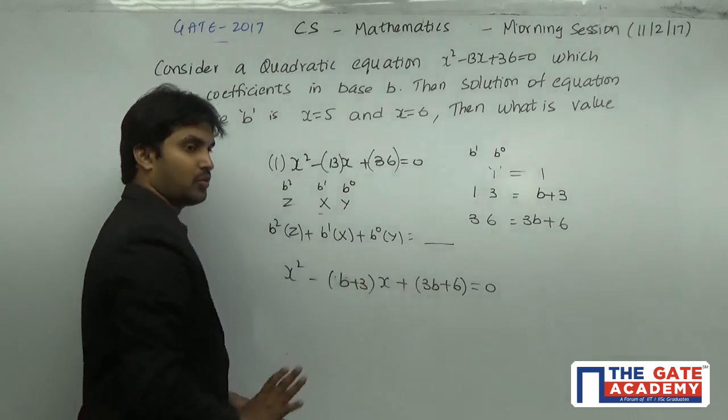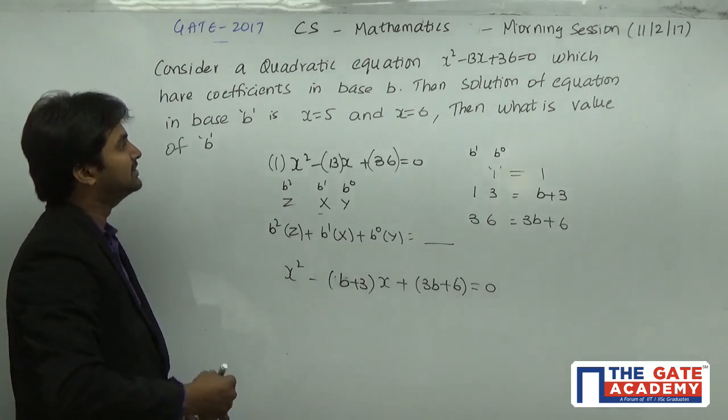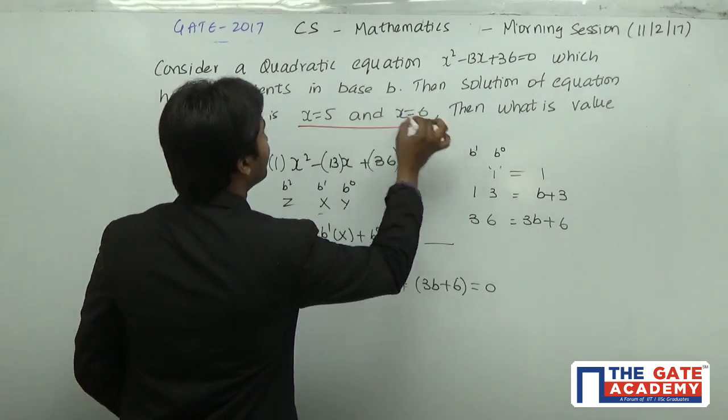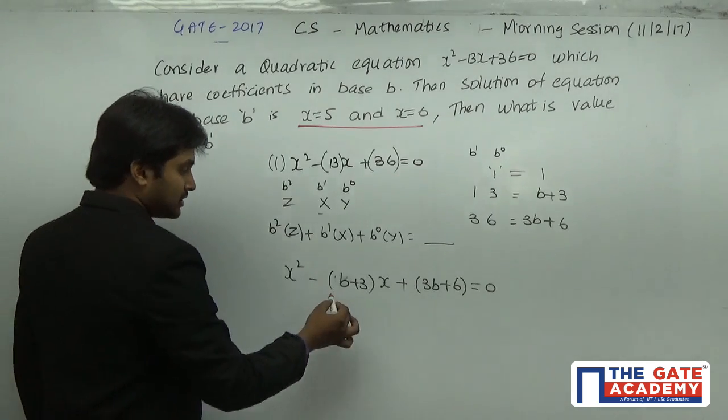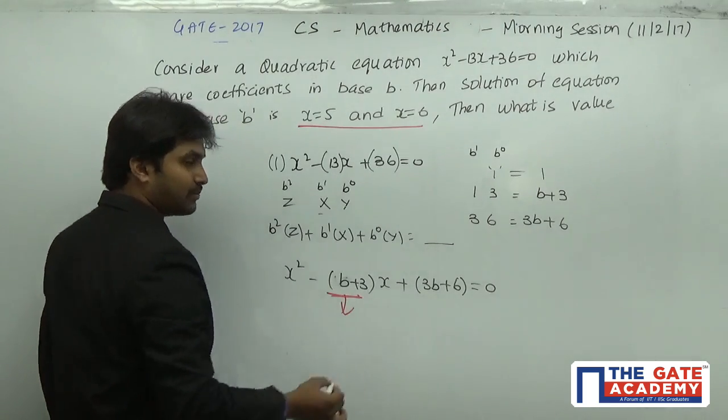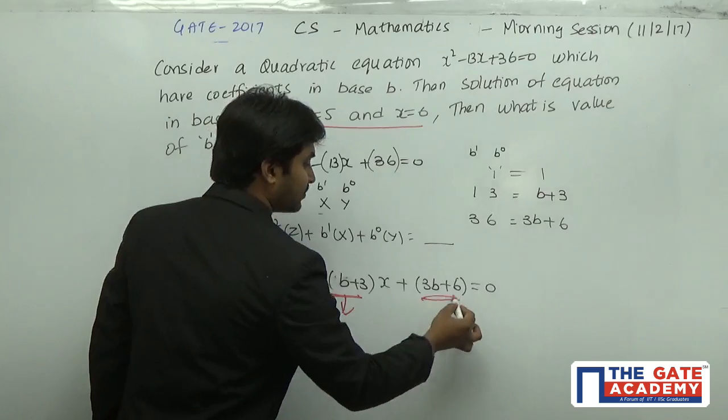And it is given that the solution for this one is x = 5 and x = 6. Now we know that this number is the sum of the roots and this number is the product of the roots.